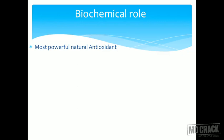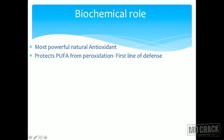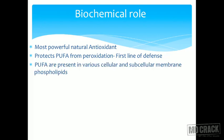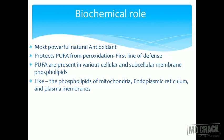What is the biochemical role of Vitamin E? It is the most powerful natural antioxidant. It protects the polyunsaturated fatty acids present in the plasma membrane from lipid peroxidation — it is the first line of defense against lipid peroxidation. PUFA are present in various cellular and subcellular membrane phospholipids, including mitochondria, endoplasmic reticulum, and plasma membranes.